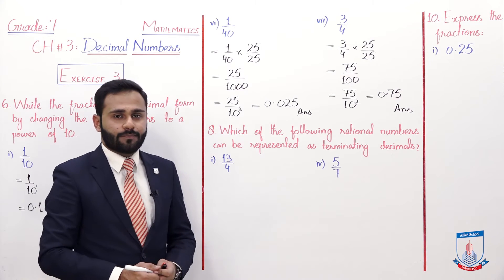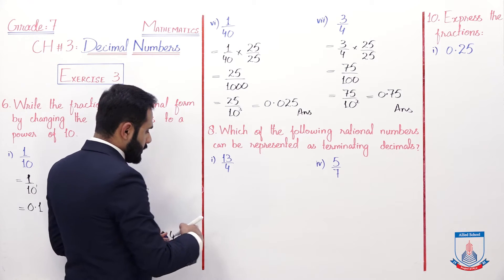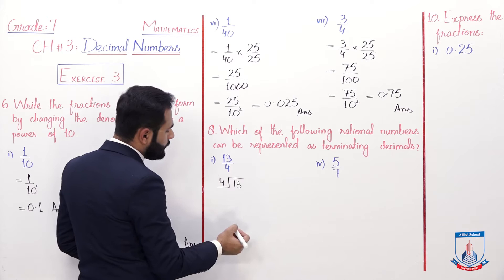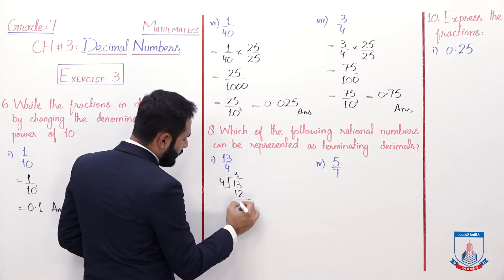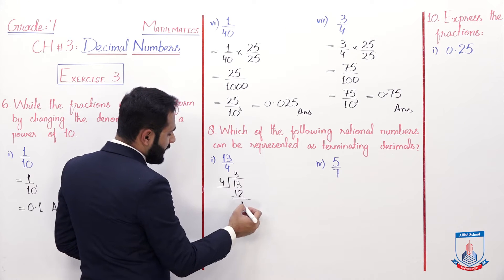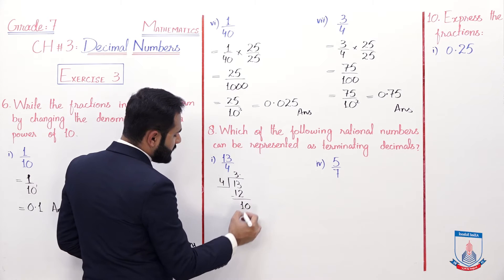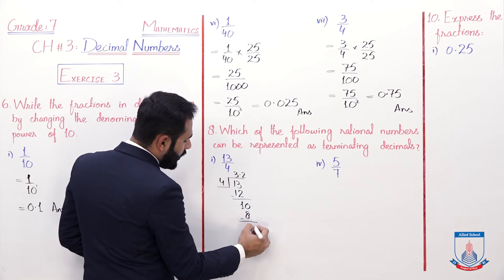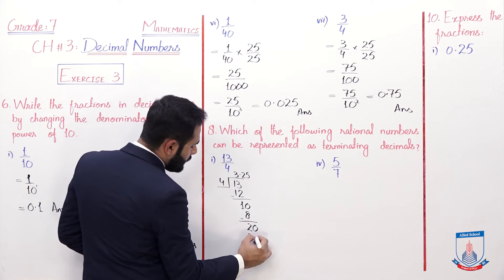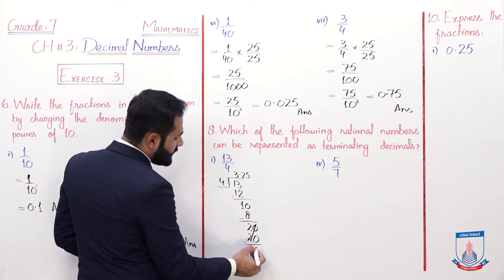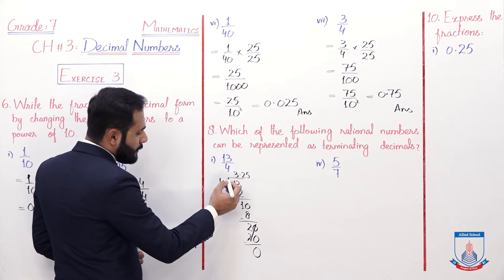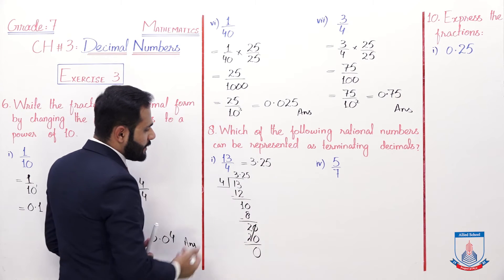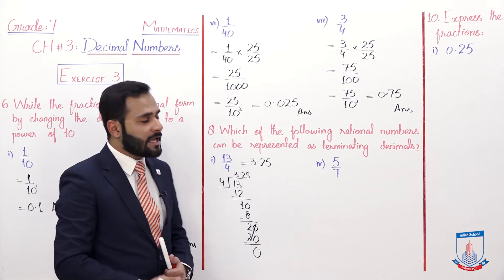The first part is 13 by 4. Isko decimal form mein convert karne ke liye divide karenge: 4 threes are 12, 13 minus 12 is 1. Further divide nahi ho sakta so point lagaate hain - point ke baad 0 aayega. 4 twos are 8, 10 minus 8 is 2; then 4 fives are 20, remainder 0. The answer is 3.25 - yeh finite digits hain, isliye yeh terminating decimal hai.